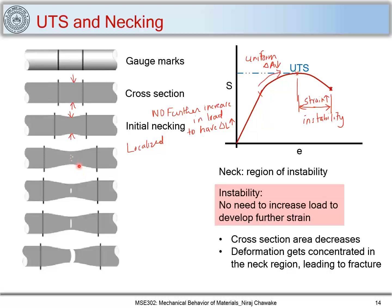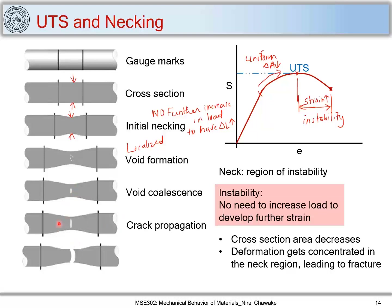The deformation gets accumulated in this region and there is creation of voids. You can see creation of voids which then merge to form a crack. That crack propagates and leads to fracture of the material. You have void formation, void coalescence — they combine and form cracks — and the crack then propagates. The crack acts as a region of stress concentration and ultimately material fails. This is the typical phenomena which occurs during necking of ductile materials.